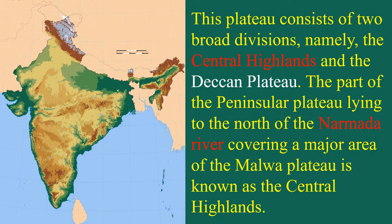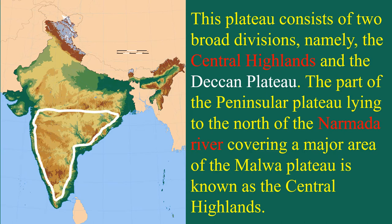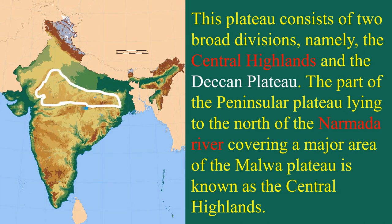The plateau consists of two broad divisions: the Central Highlands and the Deccan Plateau. The part of the Peninsular Plateau lying to the north of the Narmada River, covering a major area of the Malwa Plateau, is known as the Central Highlands.